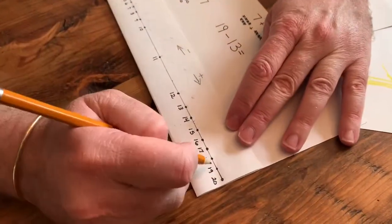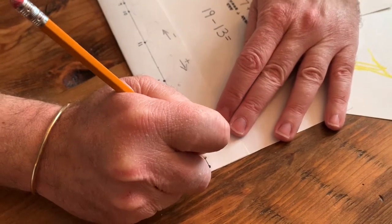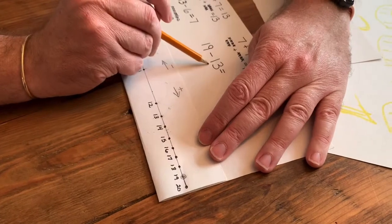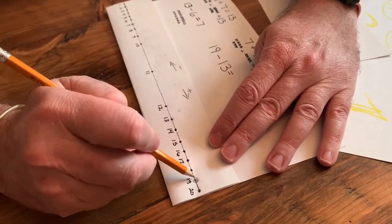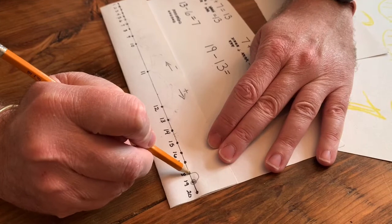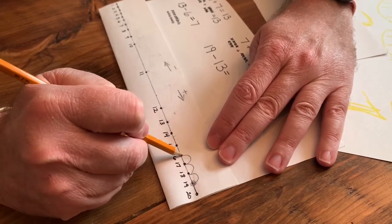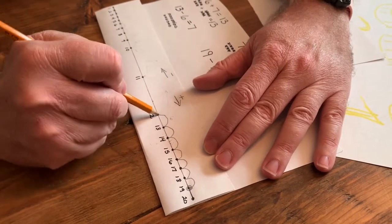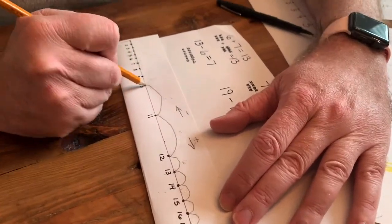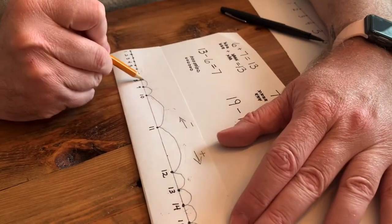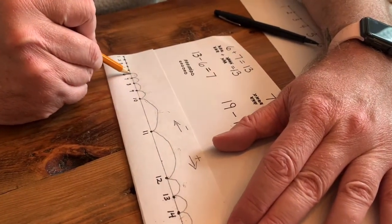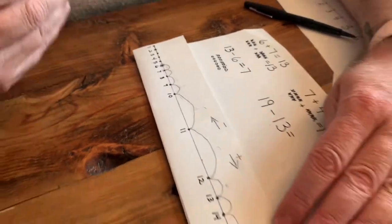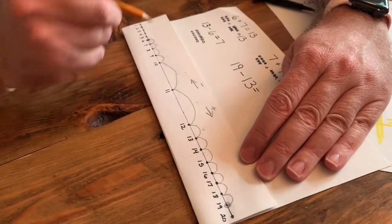So again, we're going to start at our number 19. I'm going to put my pencil. I like to put a circle just to remember where I'm at. And I'm going to count 13 leaps. That's a lot. So just take your time. 1, 2, 3, 4, 5, 6, 7, 8, 9, 10, 11, 12, 13. I'm going to stop. Put my circle around it before I pick up my pencil. Do you see how I went slow and steady to make sure I didn't lose my spot?